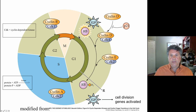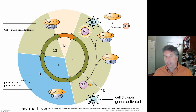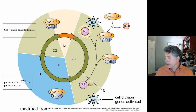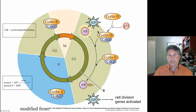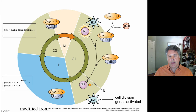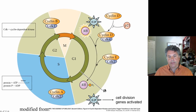We left off talking about the major players in the cell cycle in terms of determining whether or not cells will progress through the cell cycle. What I'd like to do now is introduce the important role of the retinoblastoma protein and concentrate on this G1 to S restriction point.